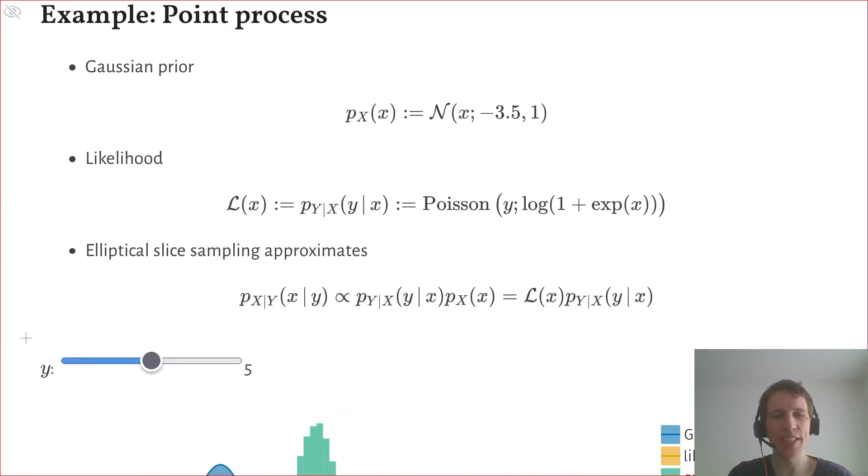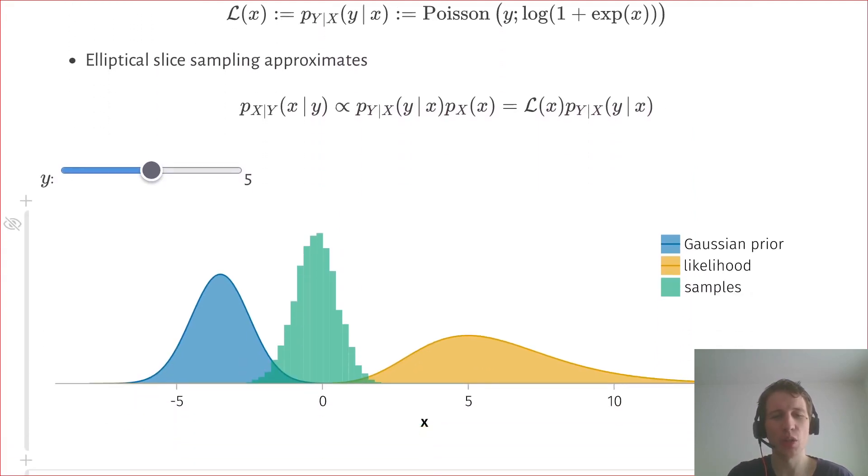Here you can see such an example where we have a Gaussian prior shown in blue, likelihood shown in yellow, and then elliptical slice sampling allows us to approximate the posterior distribution with samples shown in green.